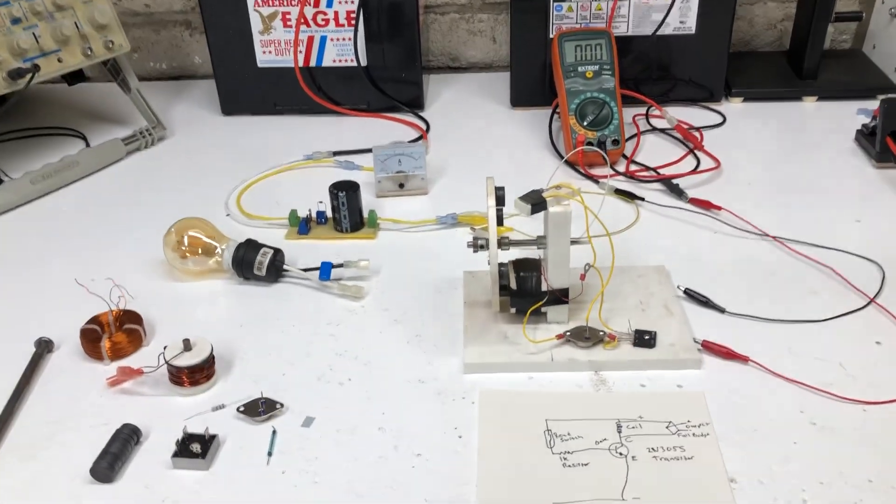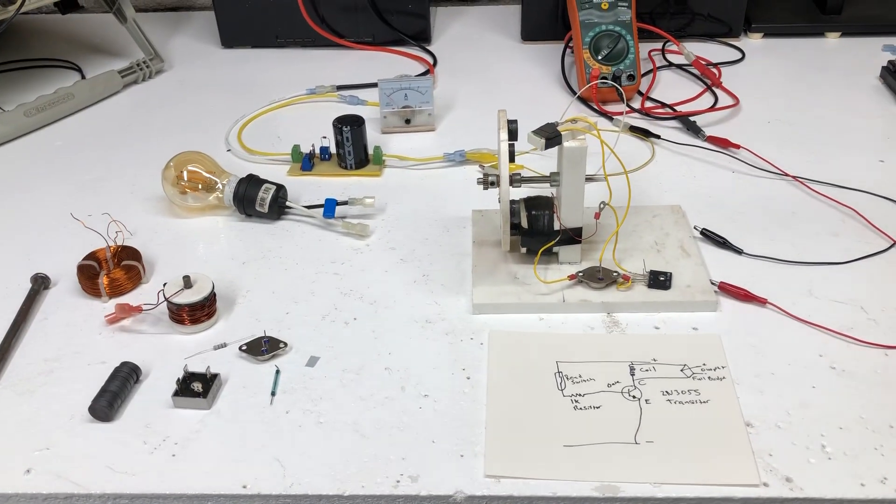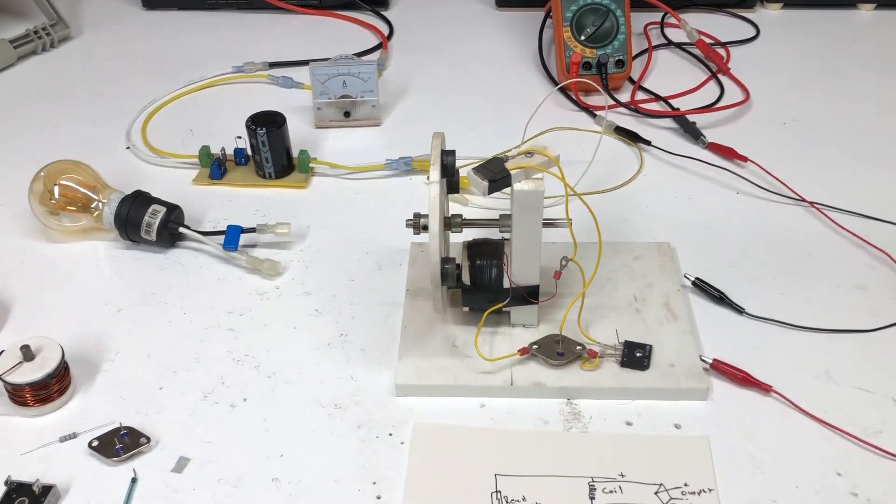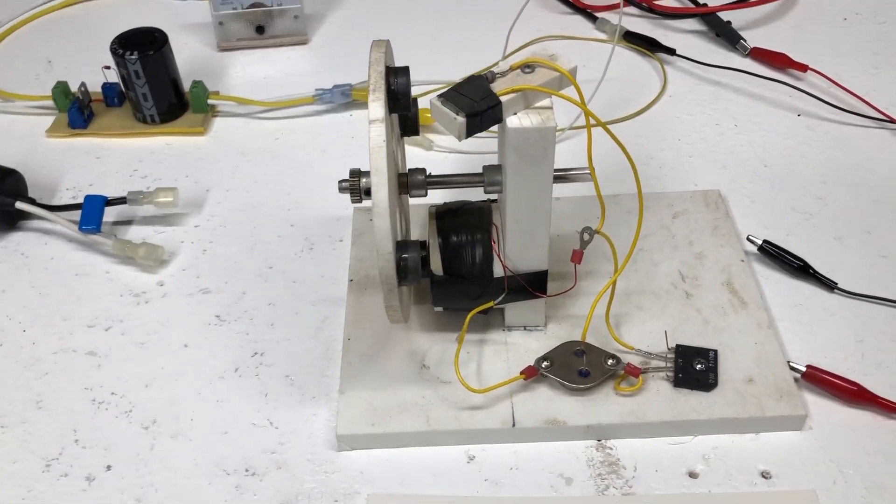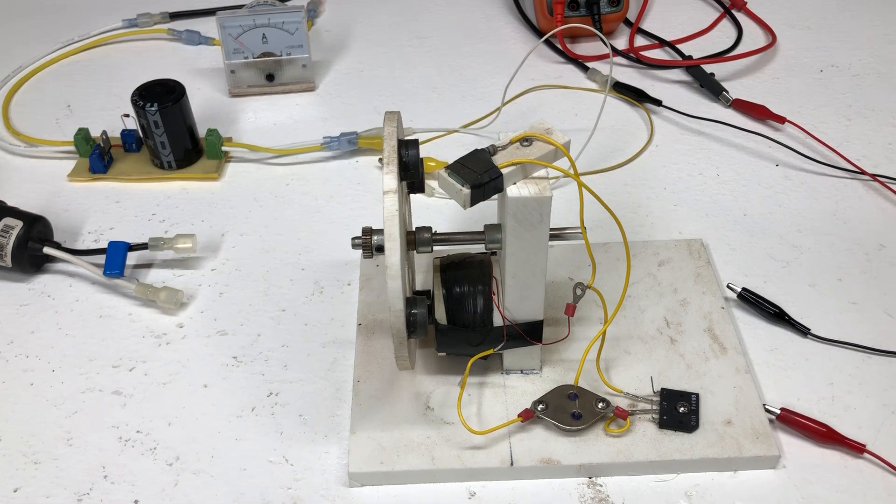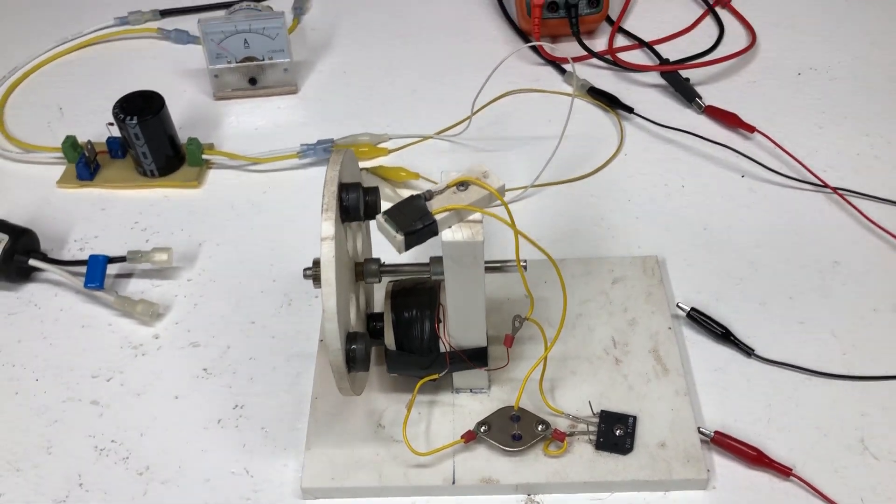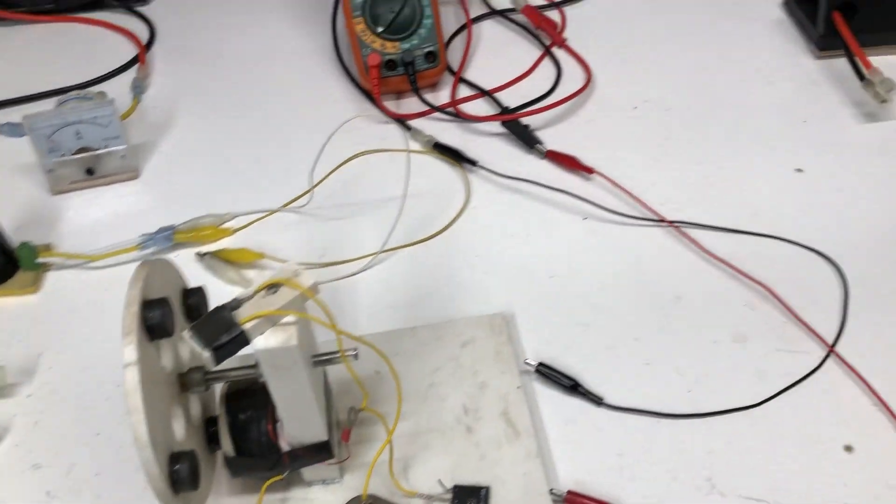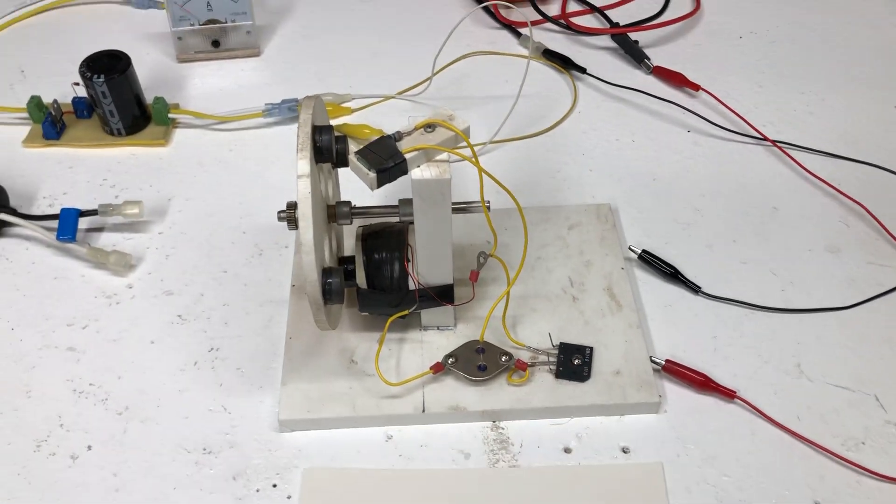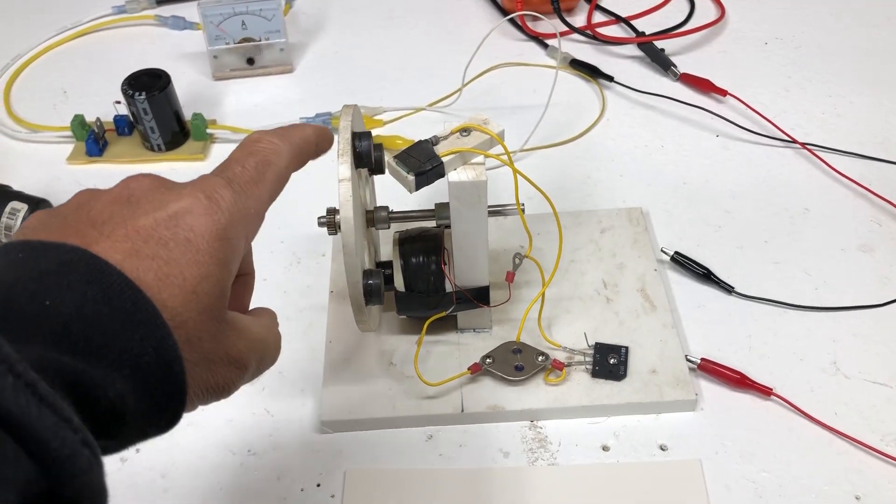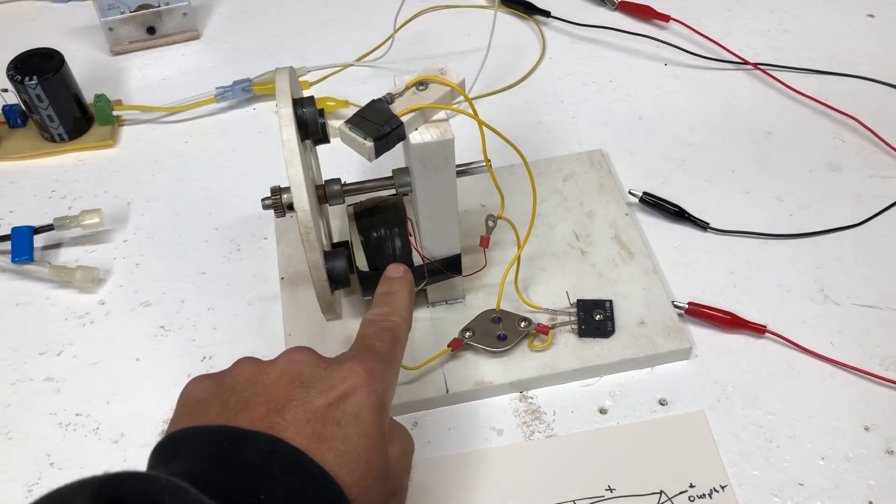Hey guys, welcome to my channel. Tonight we're going to be doing a fundamental video on this basic pulse motor, which is just a simple 2N3055 transistor, full bridge rectifier, a little reed switch, and then the magnets on it and the coil.